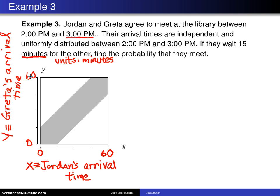Now as you might imagine, this uniform distribution is the same uniform distribution from the previous chapter. So the probability density function of Jordan's arrival time will just be 1/60th. And also, the probability density function for Greta's arrival time will also be 1/60th. So this will help lead us to finding the joint probability density function.